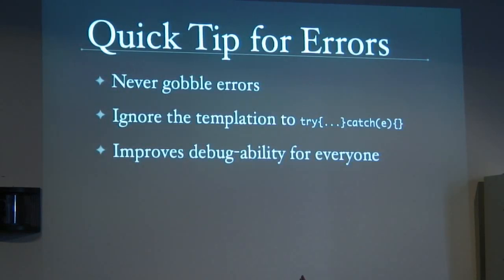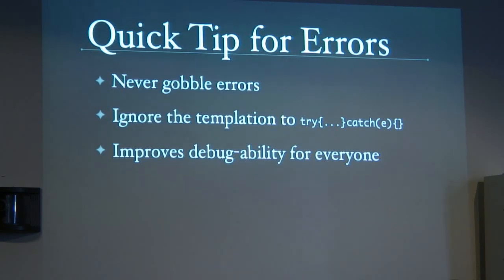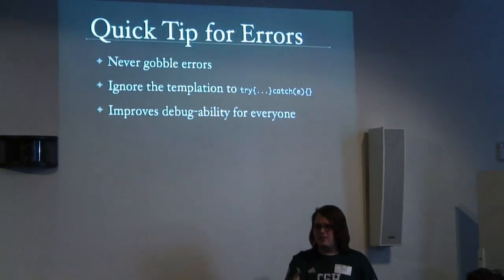Another tip for error messages: you should never gobble error messages. If a user causes an error to occur in their code — especially in a callback, an Ajax callback, or a function in a loop — never gobble the user's error messages. It seems really tempting because you don't want bad things happening on the page, but you should just let things pass through. I think you should even do this with your own library code: if an error occurs in the library, don't consume it. Just let it go free, unless you're including error messages of some sort. At least give people the hope of debugging your code.